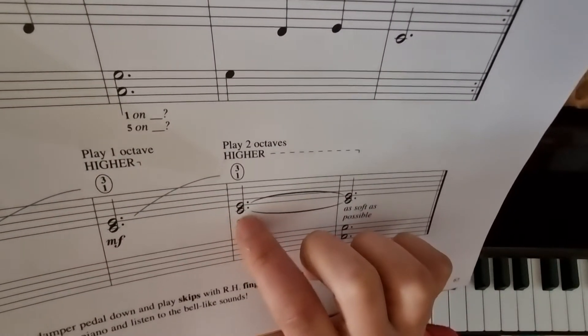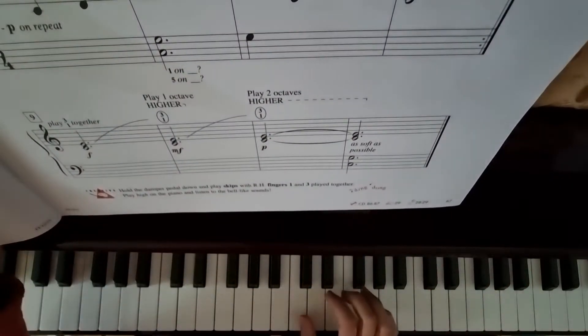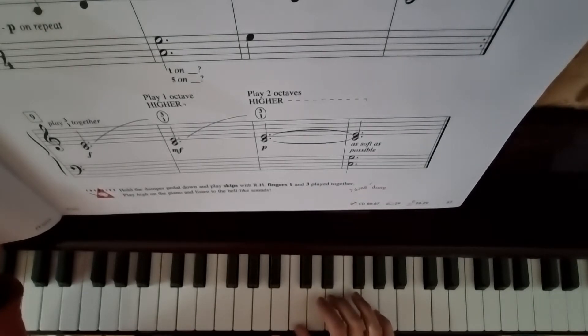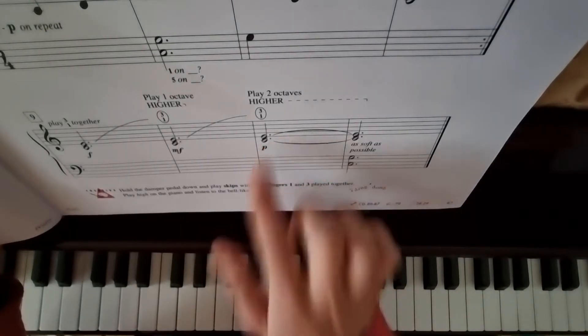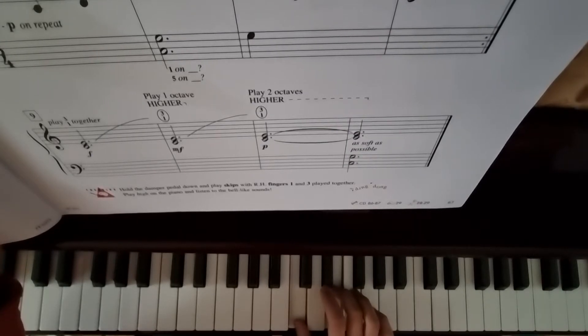So this is a C at the bottom and an E at the top. One, three. So finger number one on C, finger number three on E. You're going to hold those two together over here for six counts. One, two, three, four, five, six.